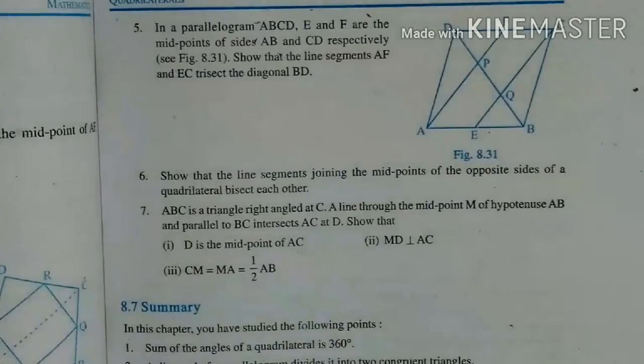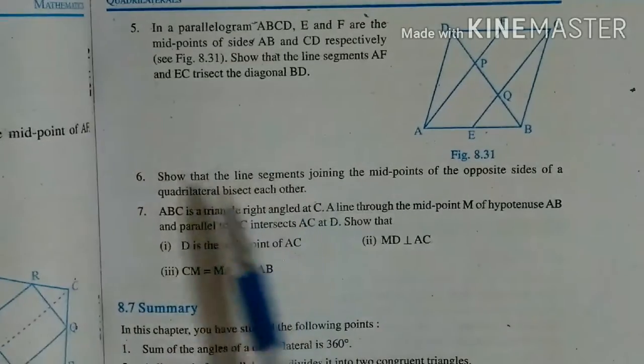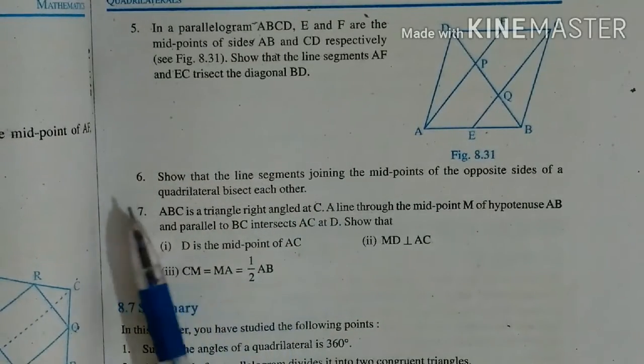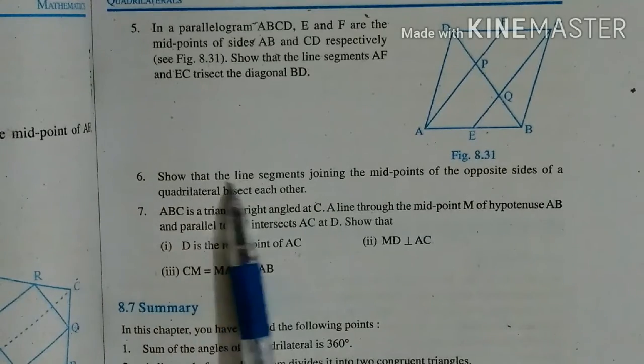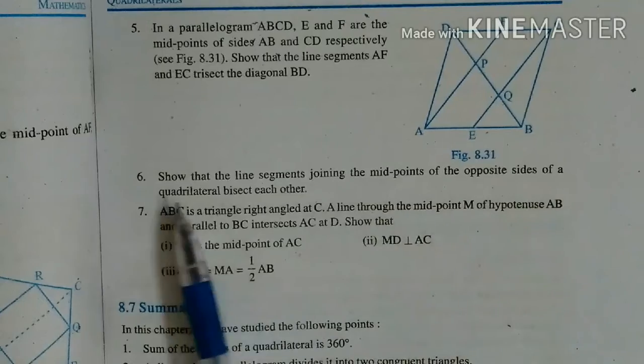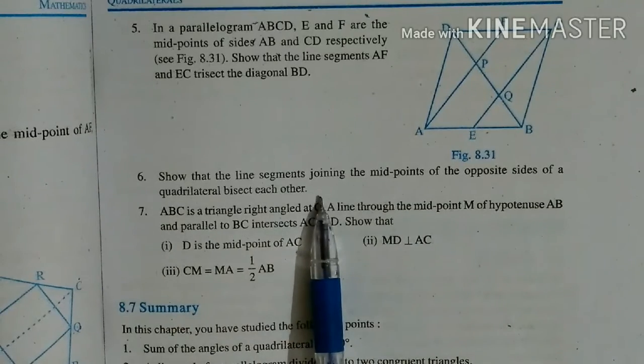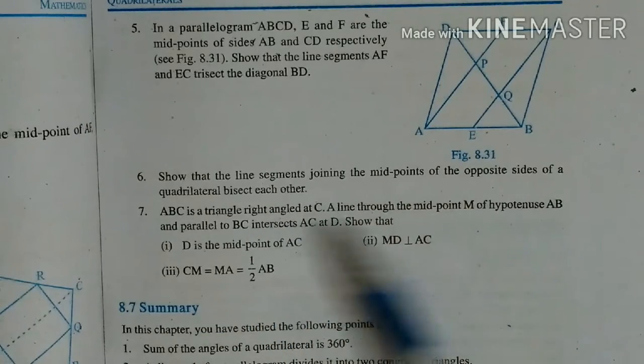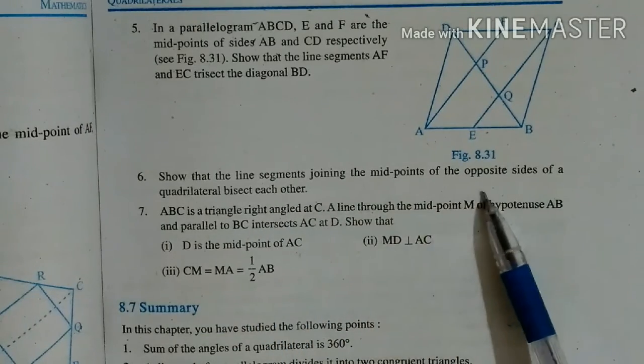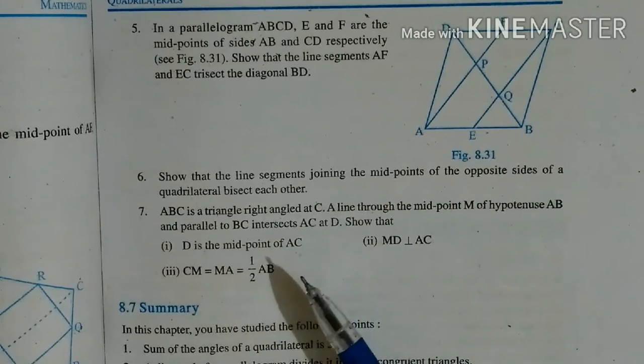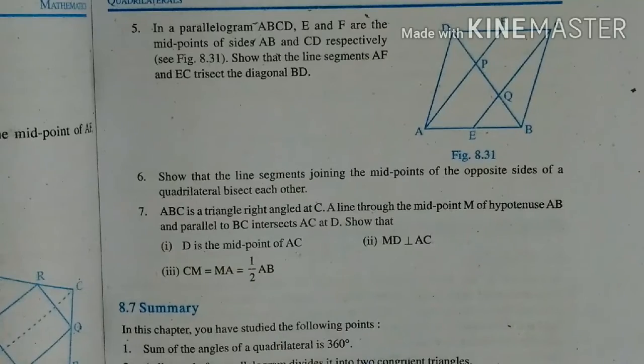Okay, question number 5 you will do, question number 6 I will tell you, question number 7 you will do. Now question number 6 is: show that line segments joining the midpoint of the opposite sides of a quadrilateral bisect each other. In a quadrilateral, the midpoints of opposite sides, if they join, then they will bisect each other and we will prove.